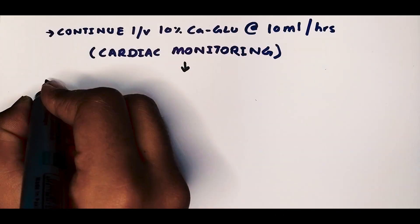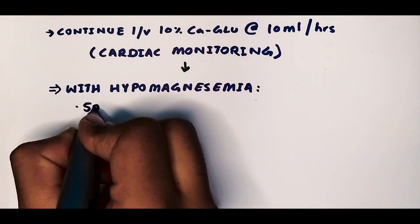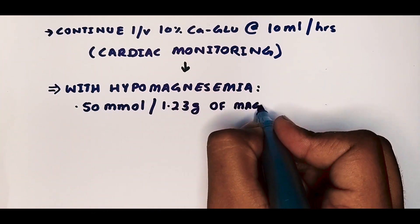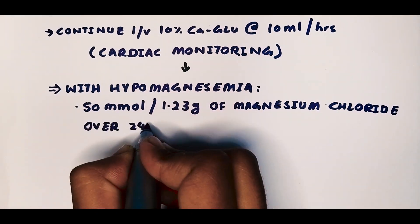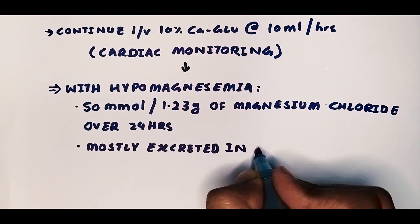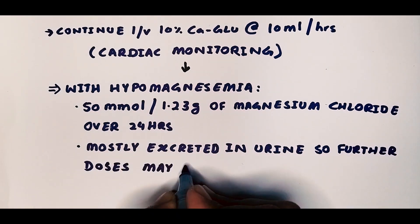Now in cases where there is an associated hypomagnesemia, we give 50 millimoles, or 1.23 grams, of magnesium chloride over 24 hours. And since most of it is excreted in the urine, some further doses may also be required.